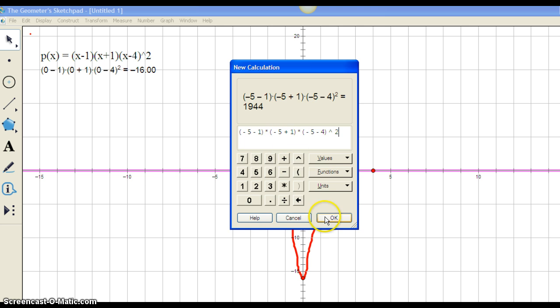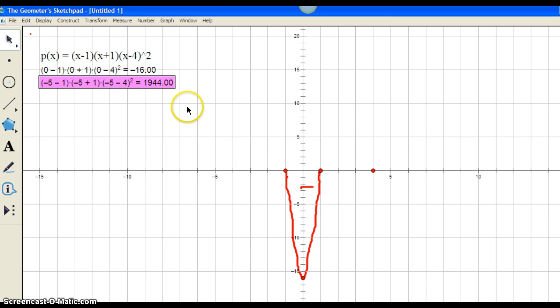You can see the answer, 1,944. So we can determine from that, from this zero, the end behavior is very quickly going towards positive infinity. So on this side, it's going to be positive. And we can see it gets to be positive pretty quickly. So I can sketch that the function is going to be coming up here.